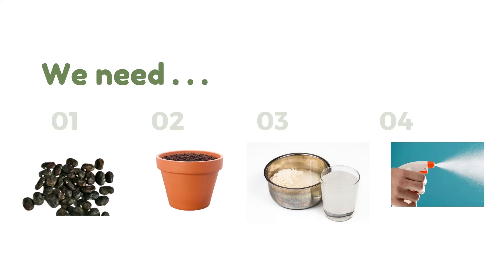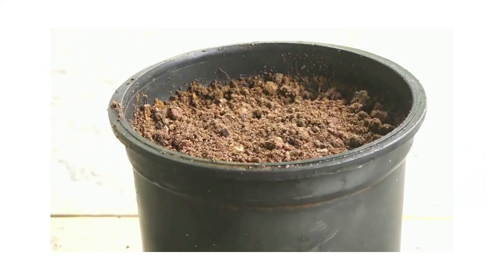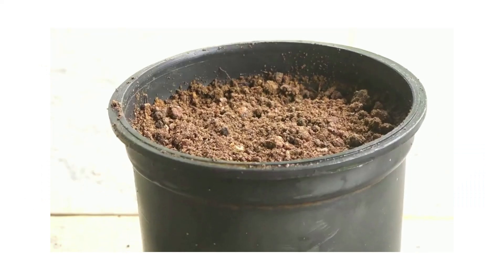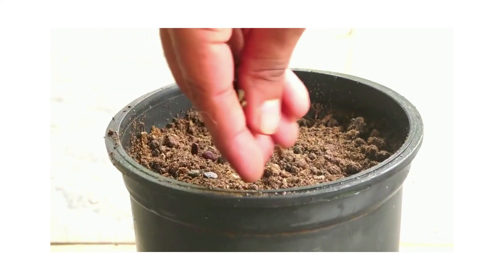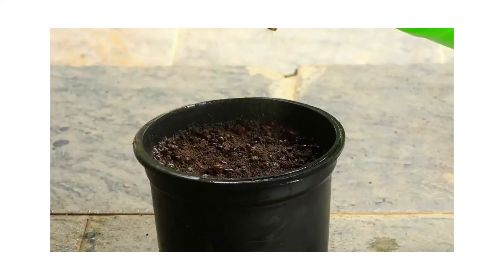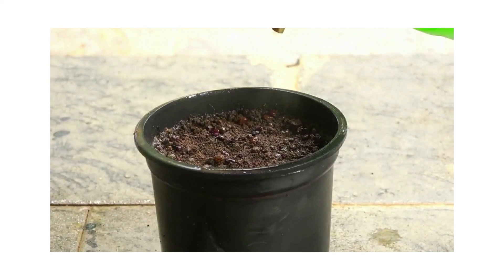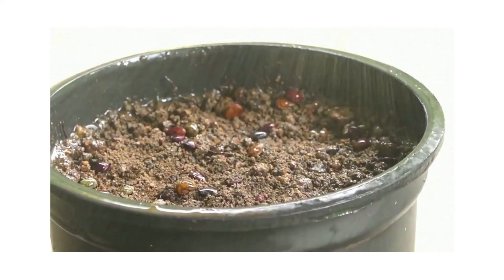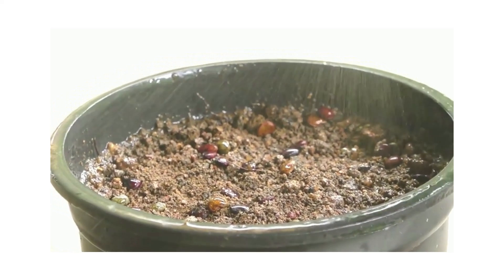Now let's prepare your pot and the soil. After that, you can pour the rice water on it, then put the seed on the soil. After that, spray water on it using the water spray. If you don't have a water spray, you can use your fingers to sprinkle some water on it.